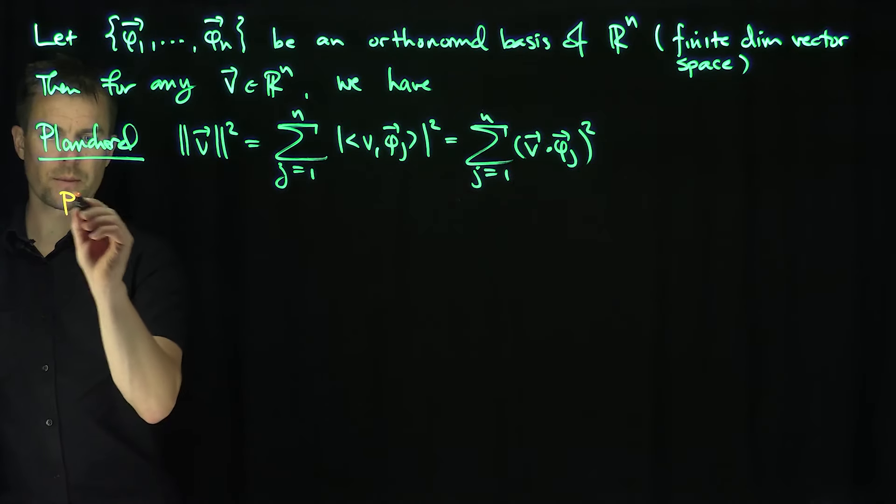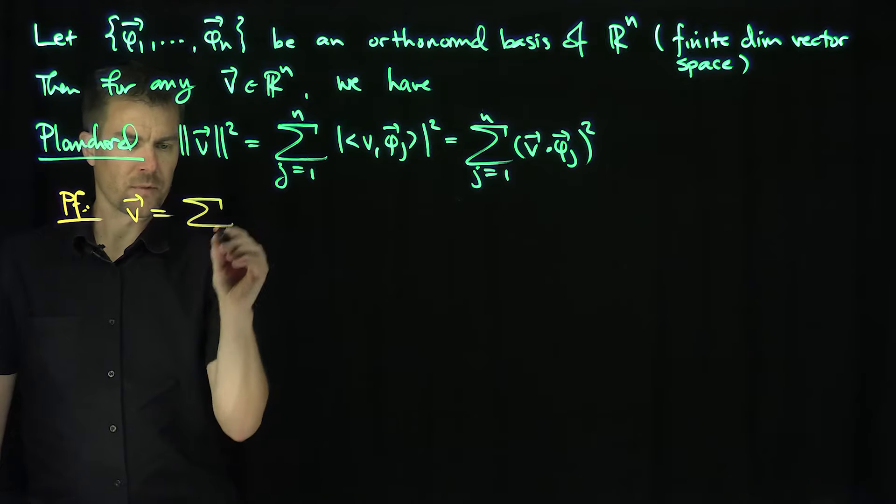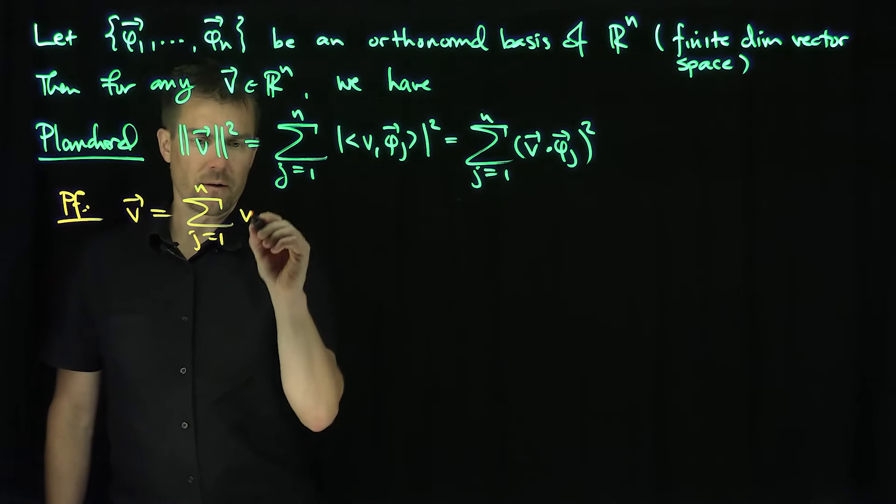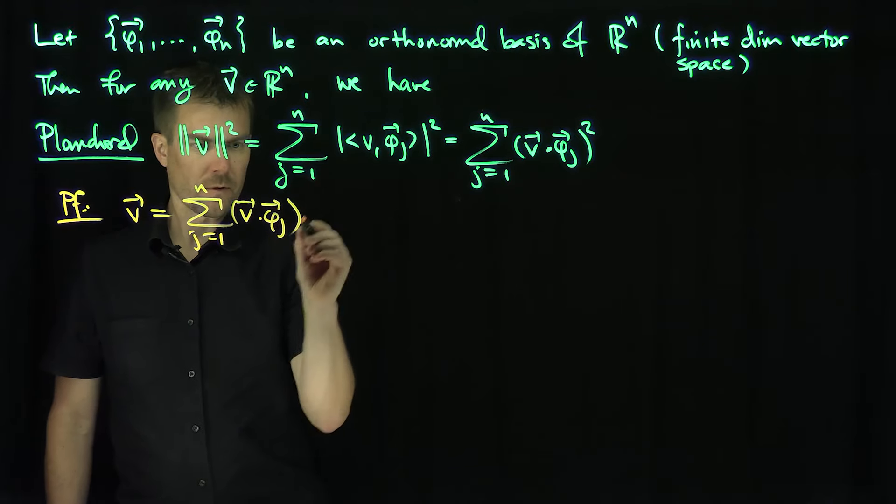The proof is just that v is the sum from j equals 1 up to n of v dot phi_j times phi_j.